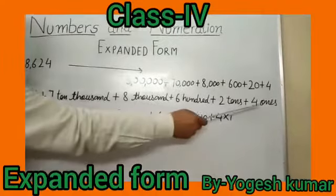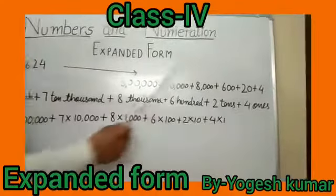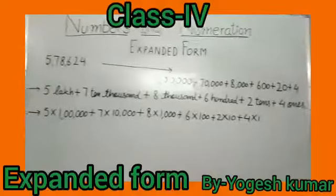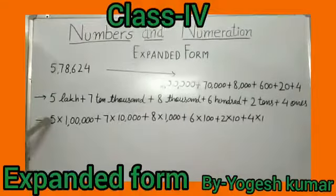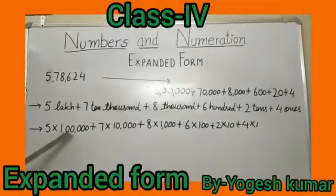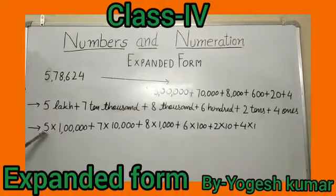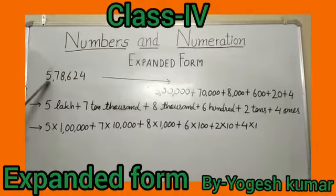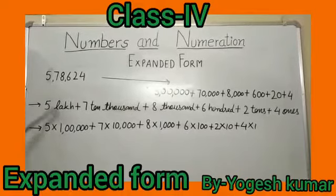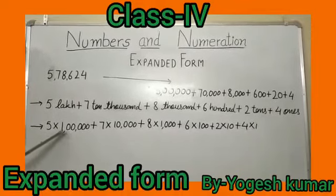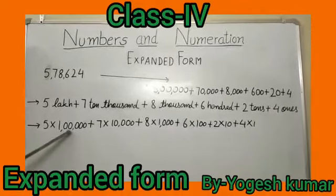4 lies on ones place — 4 ones. In the third method, multiply the digit with its place. Again, 5 lies on lakh place — 5 multiplied by one lakh.